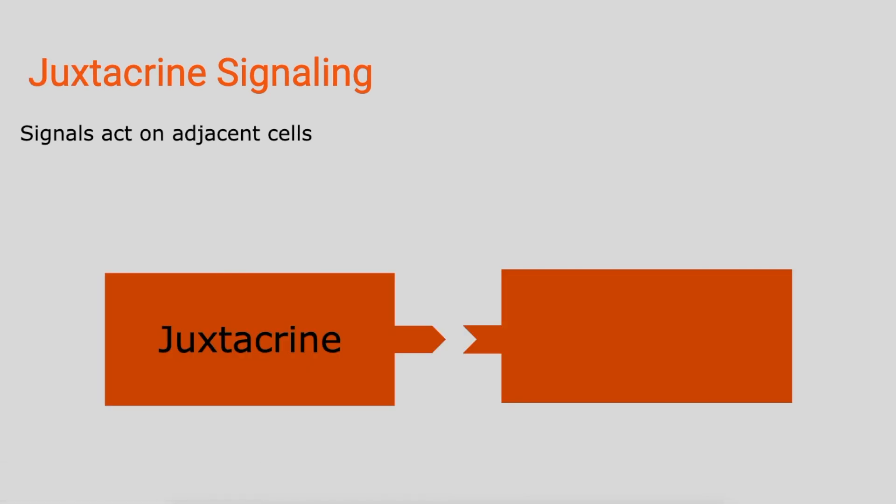In juxtacrine signaling, we get signals that act on adjacent cells. So right here, they're going to connect this way in order to pass on the signal between these cells.